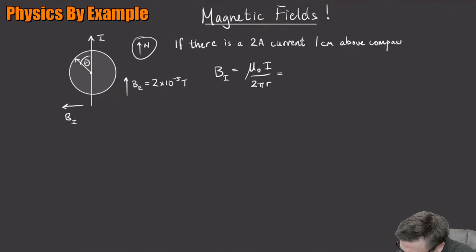So this is going to be mu naught over 2 pi is going to be 2 times 10 to the minus 7th. The current was going to be 2, and then the distance was going to be 10 to the minus 2. So it looks like this is going to be 7 minus the minus 2 is 5, so 4 times 10 to the minus 5th Tesla. There we go.